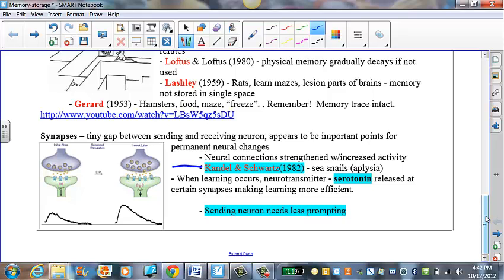The famous study that's in all the books is from Kendall and Schwartz. And they studied this sea snail called the aplasia. And the aplasia is really good to study in this case because they have only about 20,000 neurons in their brain. But they are large neurons,